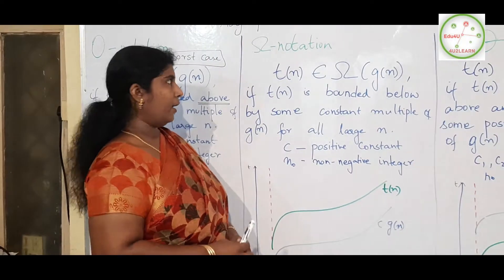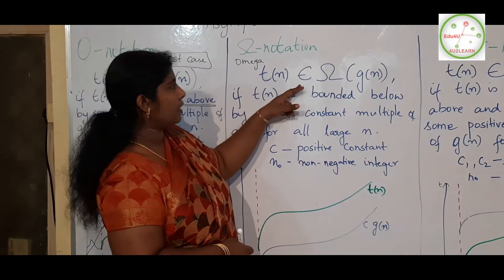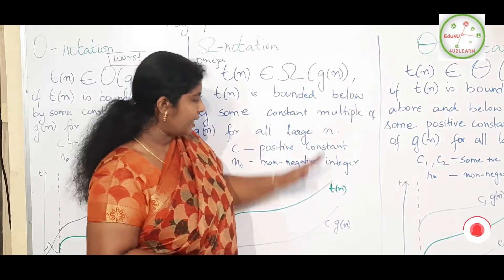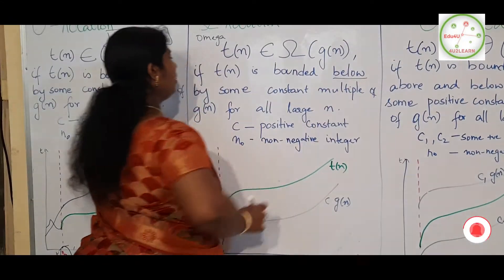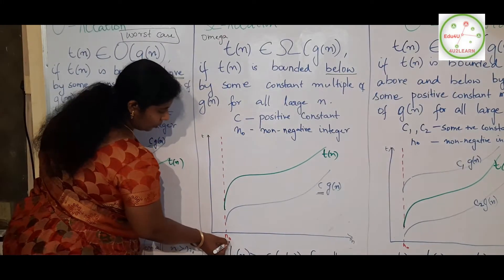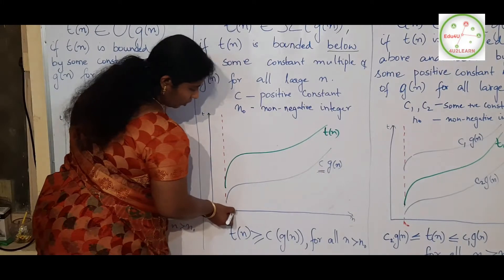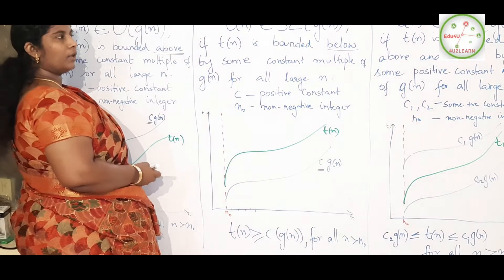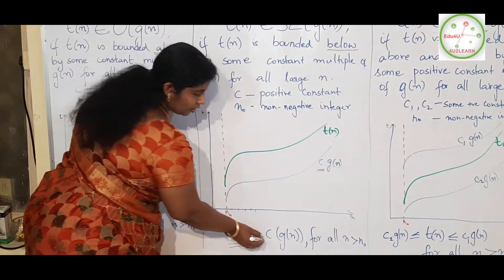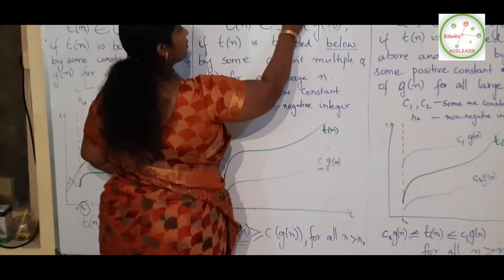Next, let us focus on Big Omega. Big Omega is defined as: T(n) is said to be in Big Omega of g(n) if T(n) is bounded below by some constant multiple of g(n). Here c is a positive constant, and n-naught is a non-negative integer. The condition holds for all values above n-naught. So T(n) is greater than or equal to the constant c multiplied by g(n) — this is the lower bound.